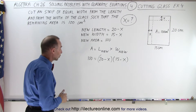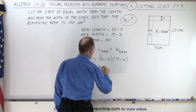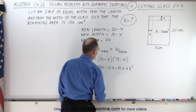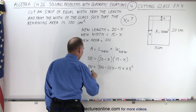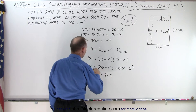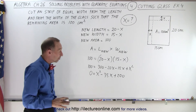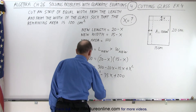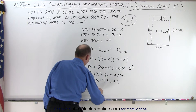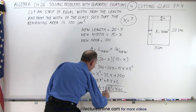Looks like we're going to end up with a quadratic equation, so let's multiply these out. We have 100 equals 20 times 15 — that's 300 — minus 20x minus 15x plus x squared. Combining everything and moving 100 across, we get 0 equals x squared minus 35x plus 200. Now we can solve this with the quadratic formula: x equals minus b plus or minus the square root of b squared minus 4ac, all divided by 2a.